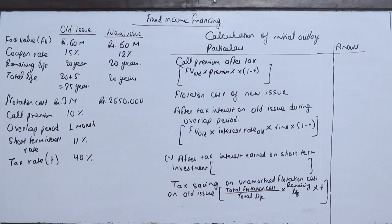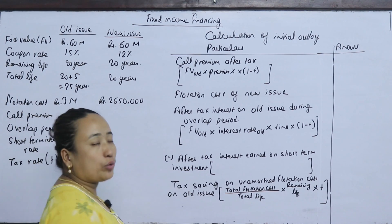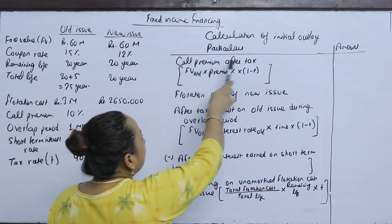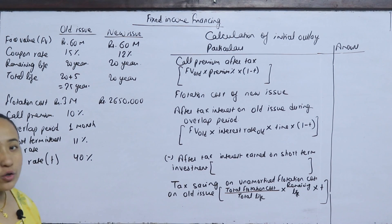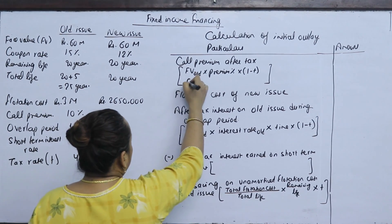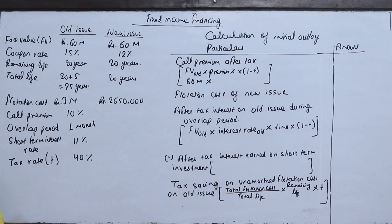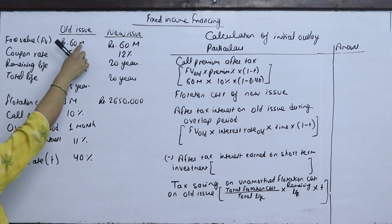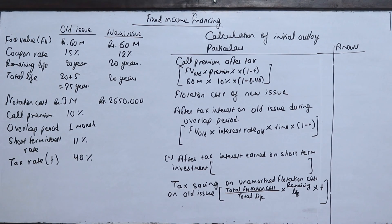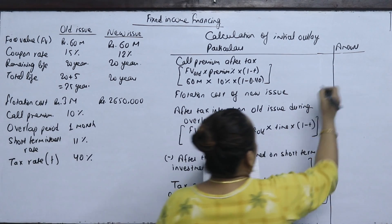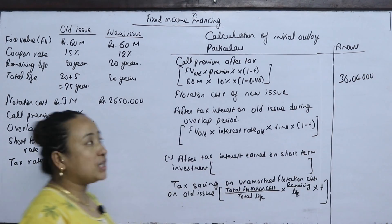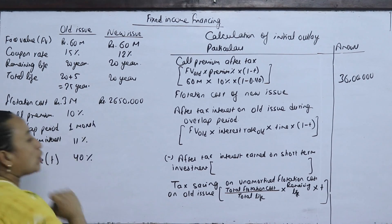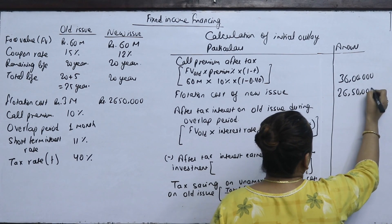Calculation of initial outlay. The call premium: face value is $60 million, call premium is 10%, multiplied by (1 - T), where T = 0.40. This gives 36,00,000. The flotation cost of the new issue is 26,50,000, taken as-is.